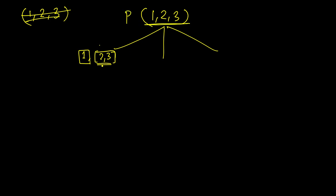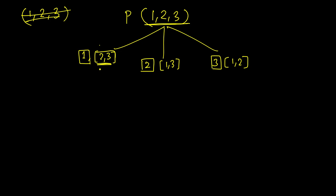We apply the same function on this smaller list. Similarly, two can be at the first place, so we fix it and call the same function on one and three. Next, three will be at the first place and we apply the same function recursively on one and two. We are reducing the size by one each time.